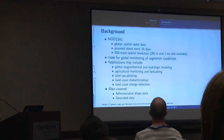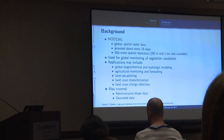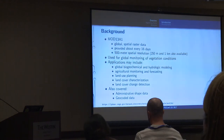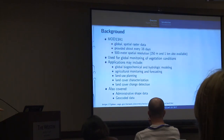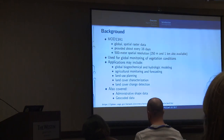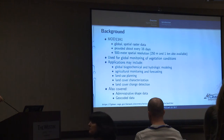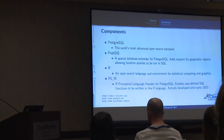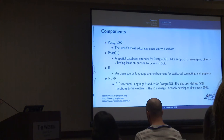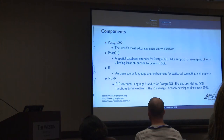I'll show you where you can get this data. There are lots of applications for this kind of data. I'm doing this for my county in California — Southern California — and most people are aware there's been severe drought there for the last several years, so I thought it would be interesting to look at vegetation over time. I'm also going to cover administrative shape data and some geocoded data. The components I'm going to use are Postgres, PostGIS, R, and PLR. Everyone here probably knows what Postgres and PostGIS are.